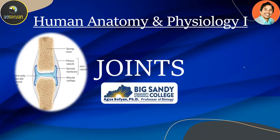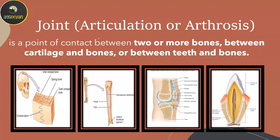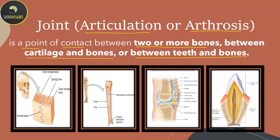Hello everyone. Today we will discuss joints. A joint, also called articulation or arthrosis, is a point of contact between two or more bones, between cartilage and bones, or between teeth and bone. So basically, a joint is a point of contact between bones and other bones.